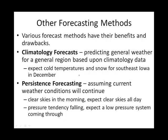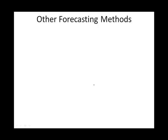Persistence forecasting works better for some regions of the world than others. It says that the weather you're having now will persist — it will maintain what it is. So tomorrow when you get up, it's like Groundhog Day — you'll have very similar weather. I don't think you need a computer, necessarily, to do climatology forecasts or persistence forecasting. We probably do that all the time.